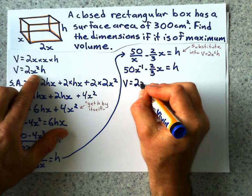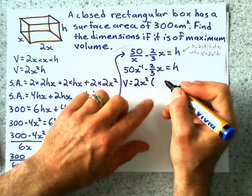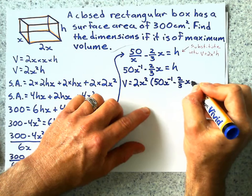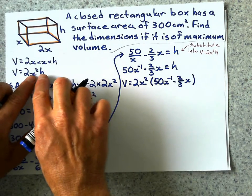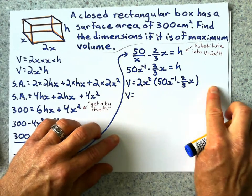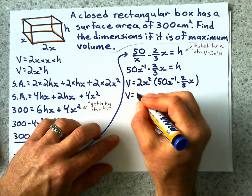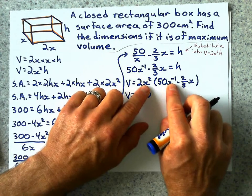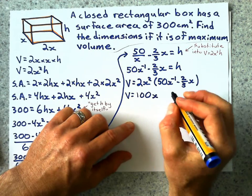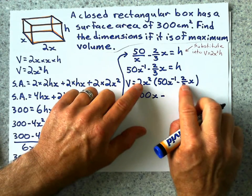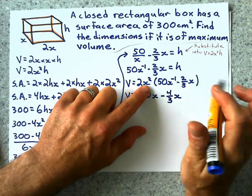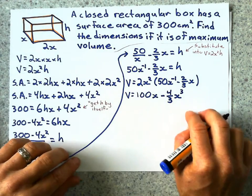So v equals 2x squared. And now I put this expression in. 50x to the negative 1 minus 2 thirds x. So I just crammed it in there. And now I'm going to simplify this by expanding it, multiplying it through. And I get 2 times 50 is 100. x squared times x to the negative 1 just gives me an x. Adding the exponents just gives me x to the 1. Minus, this gives me 2 times negative 2 thirds is minus 4 thirds. Because x squared times x is x cubed.